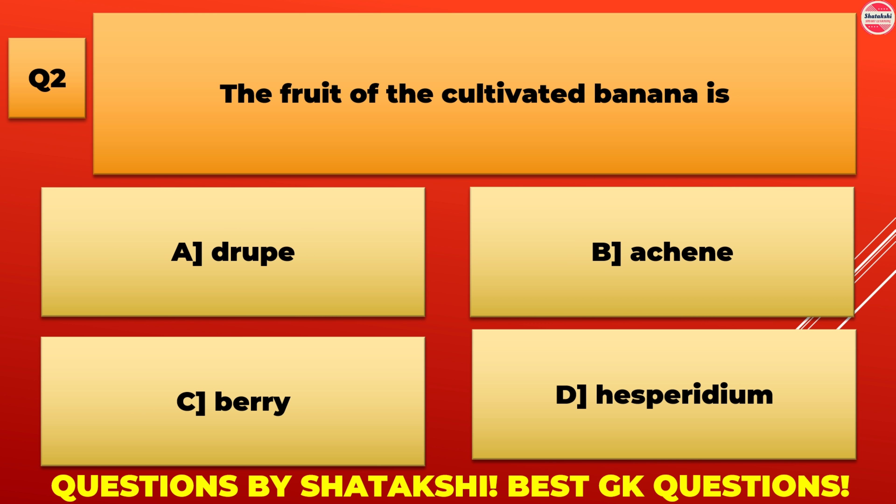The fruit of the cultivated banana is: A. Drupe, B. Achin, C. Berry, D. Hesperidium. C. Berry is the correct answer.